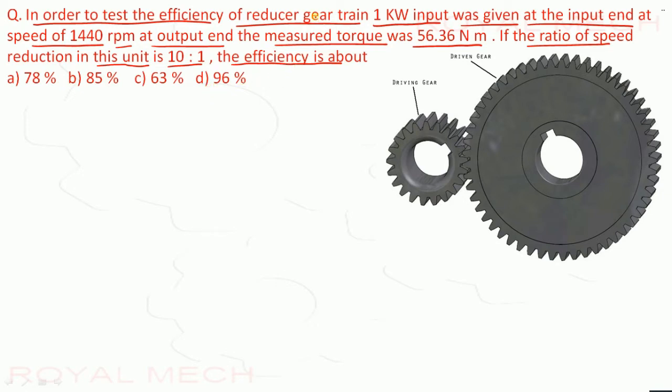So here they are telling it is a reducer gear train, 1 kW input is given. So reducer gear train, 1 kW input is given at the driving gear or also it can be called as pinion. And then the RPM is 1440. And at output end, the torque measured is 56.36 Nm.